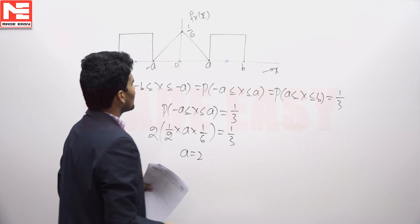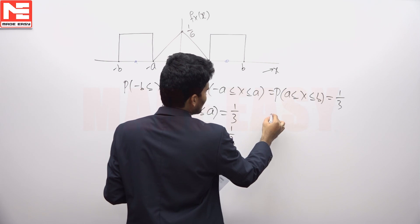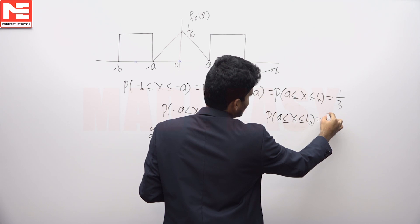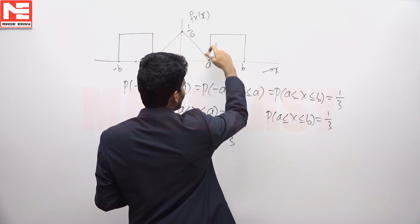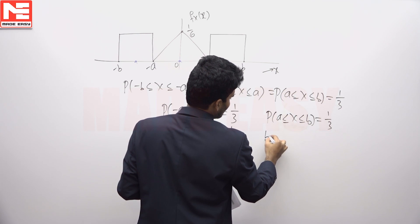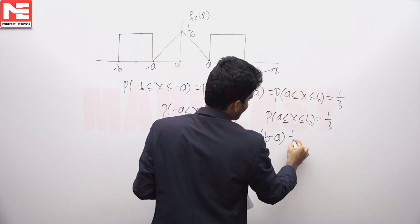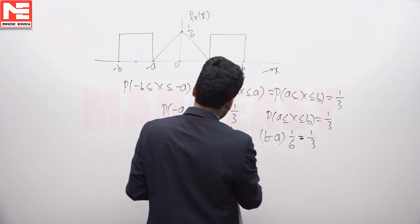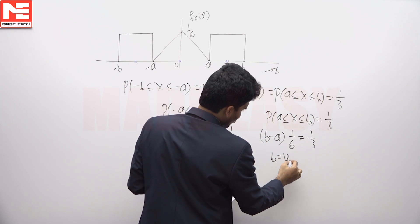To find B, take the 3rd level. The probability of A less than or equal to x less than or equal to B is 1/3. The area here is a rectangle: length times breadth, which is (B minus A) times 1/6, equals 1/3. Since A is already found to be 2, from this B equals 4.